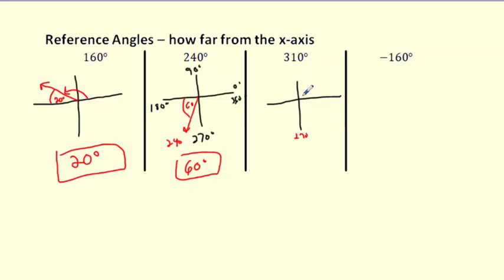How about 310°? I pass the 270° marker and end up in the fourth quadrant. How far away from 360° is it? From 310 to 360 is 50 degrees, so the reference angle is 50°.